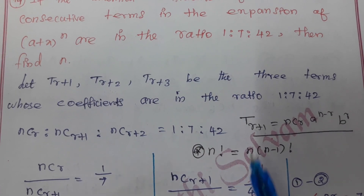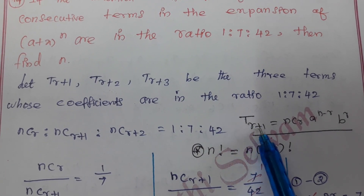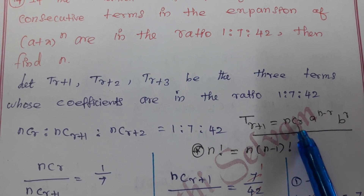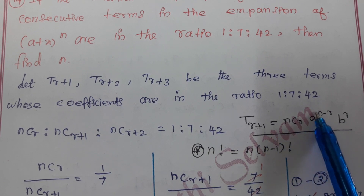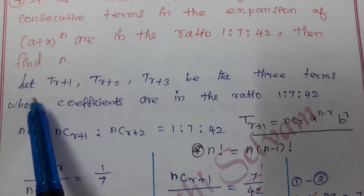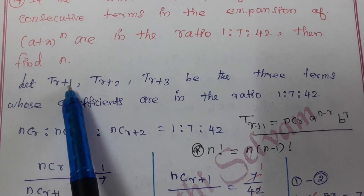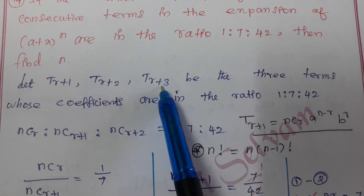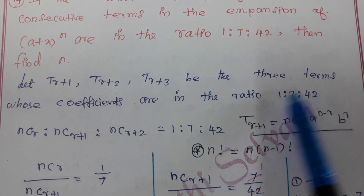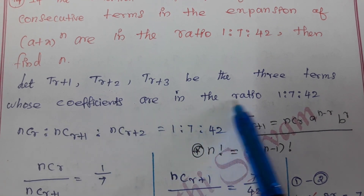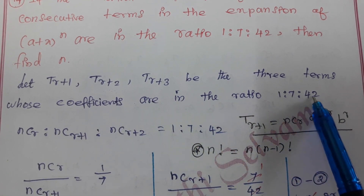If we use the formula, we will be able to find the value. T(r+1) is equal to NCr multiplied by a^(n-r) into b^r. Let T(r+1), T(r+2), and T(r+3) be the three terms whose binomial coefficients are in the ratio 1:7:42.